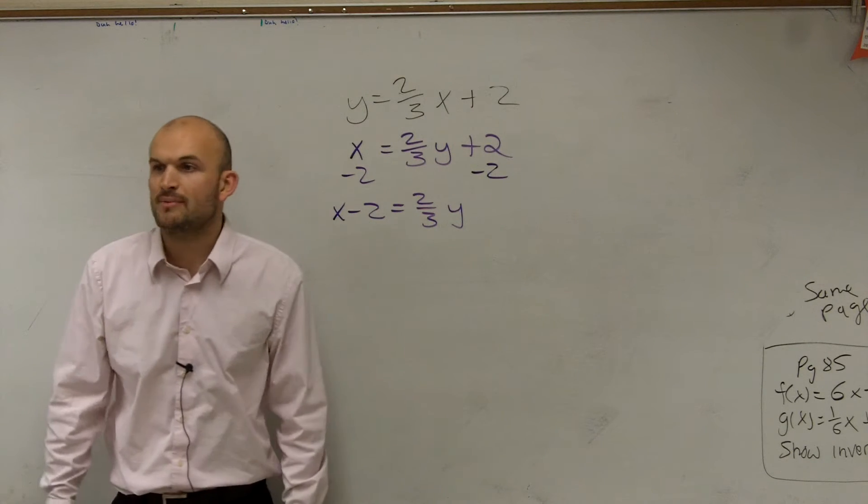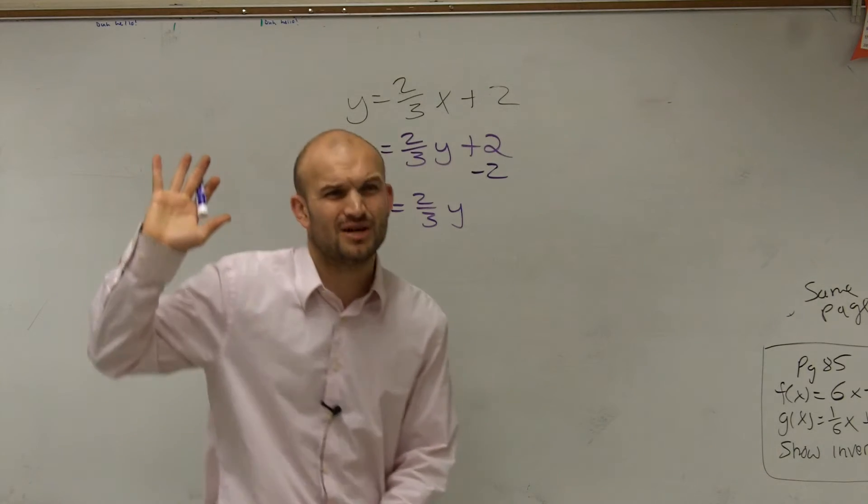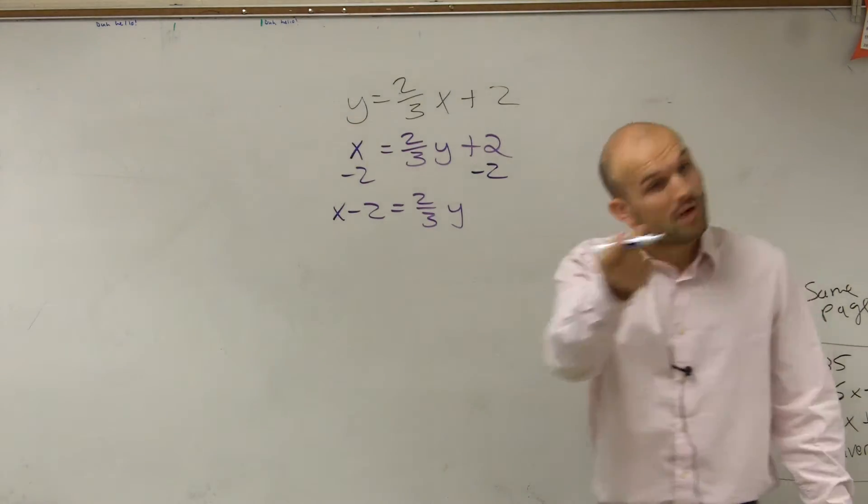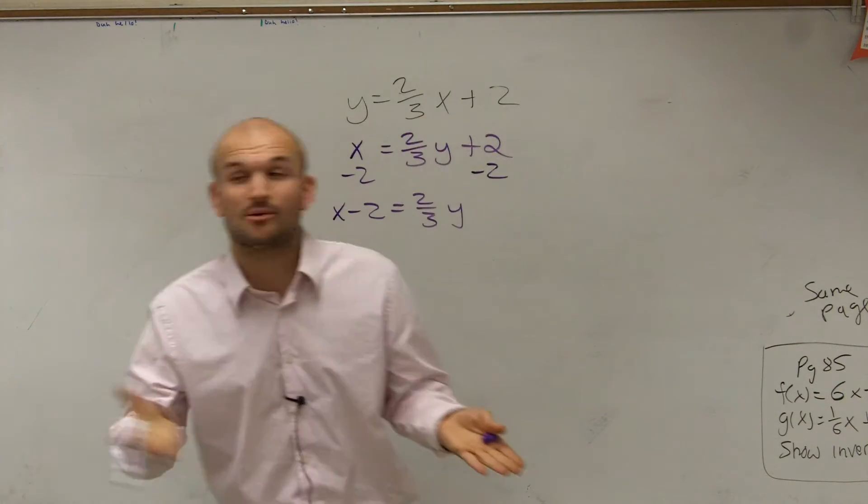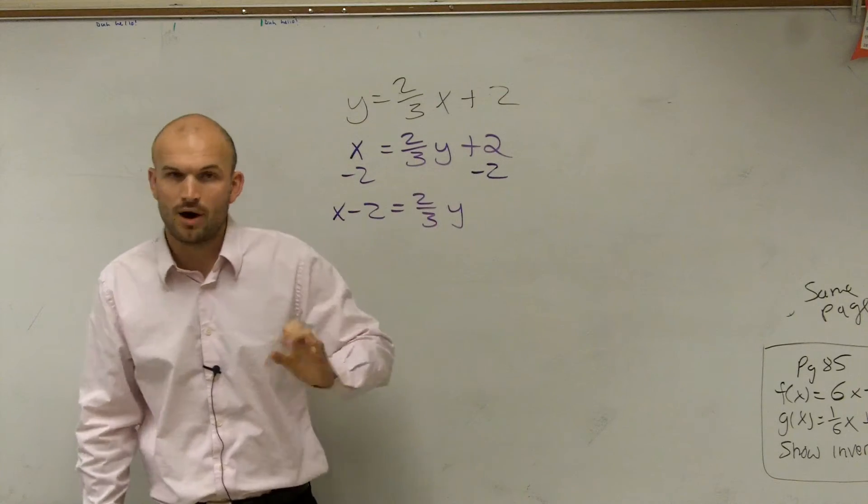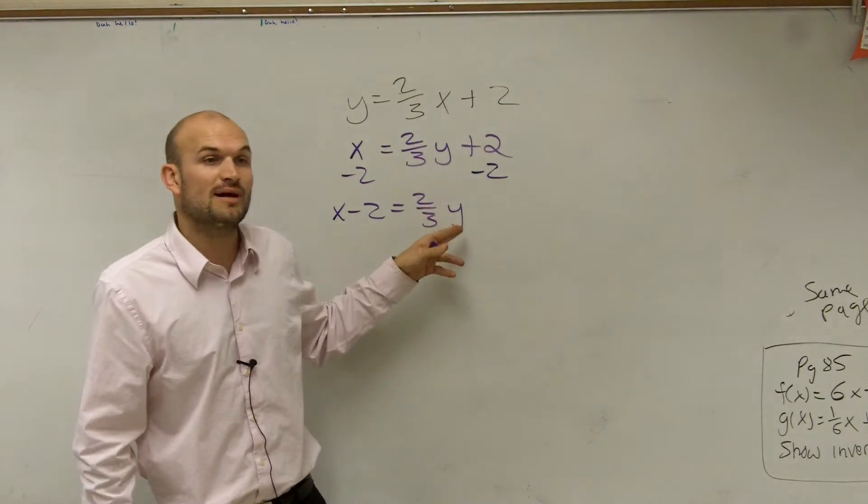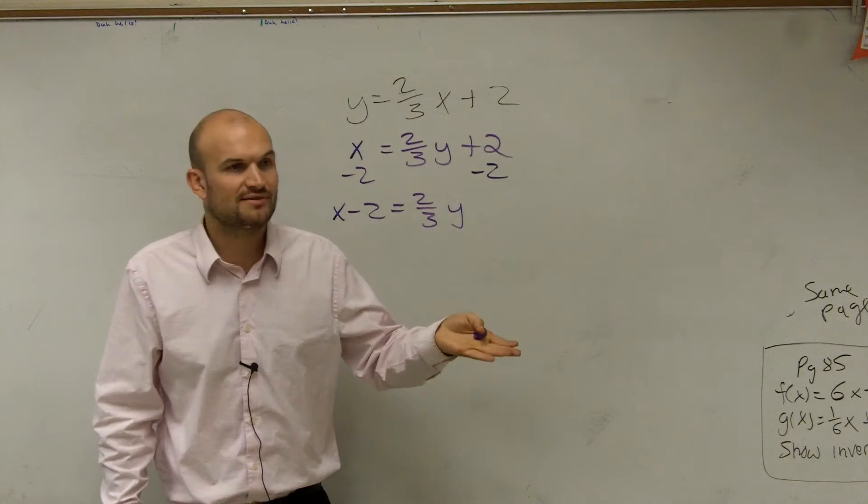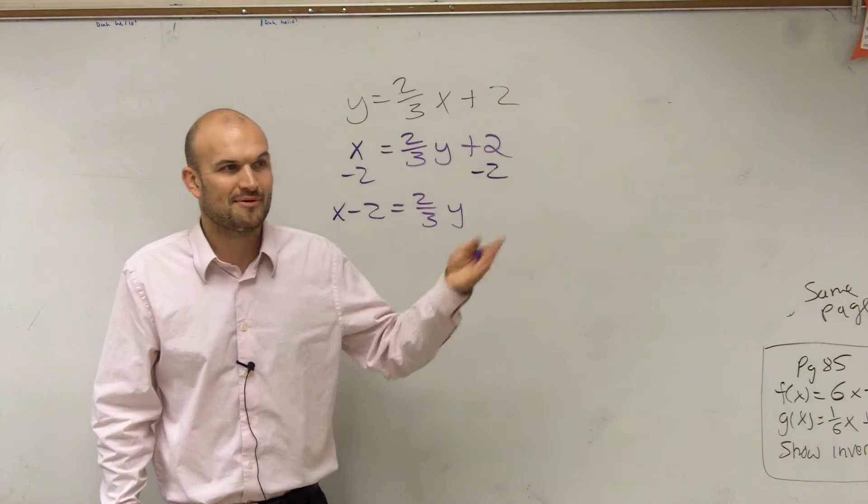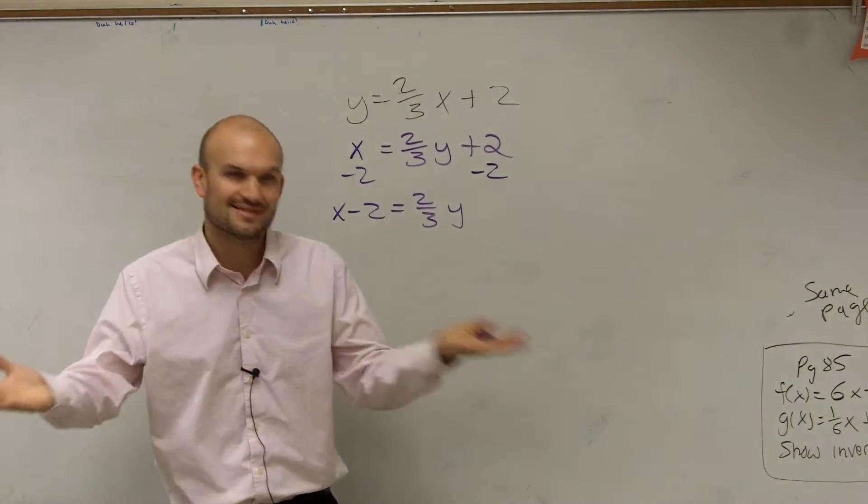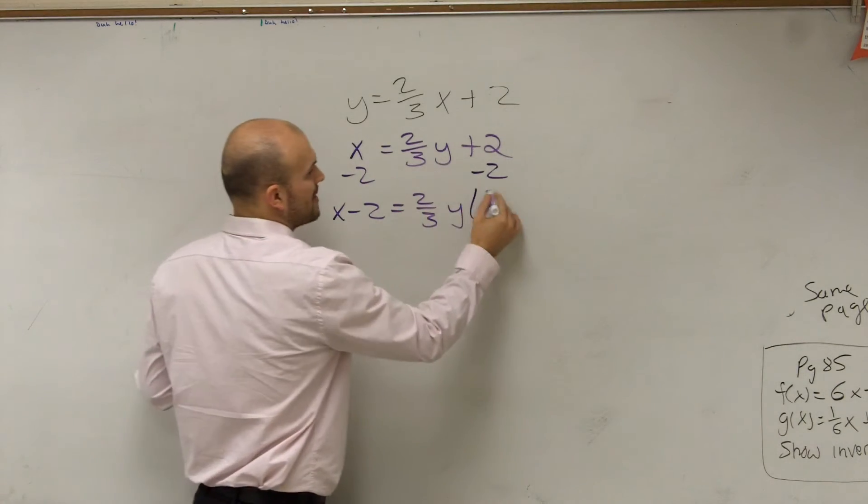Now to undo multiplying by 2/3, does anybody know what you have to do? Multiply it by the reciprocal, right? Because any number multiplied by its reciprocal is going to be 1, and 1 times y would just leave us with y. You could also undo multiplying by 2/3 by dividing by 2/3, right? But how do we divide fractions? Flip and multiply. If you flip that, you get the reciprocal and multiply. So it's the same thing. So let's multiply by the reciprocal.